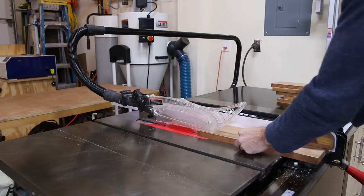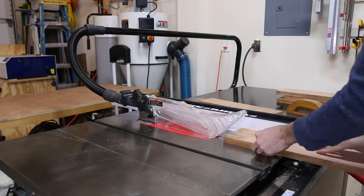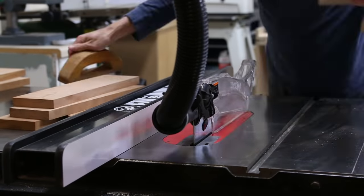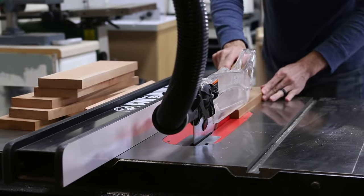Each stool top is made from a three board glue up. I ripped the parts for the top down to size on my table saw, referencing that straight edge that I made on the joiner against the fence.